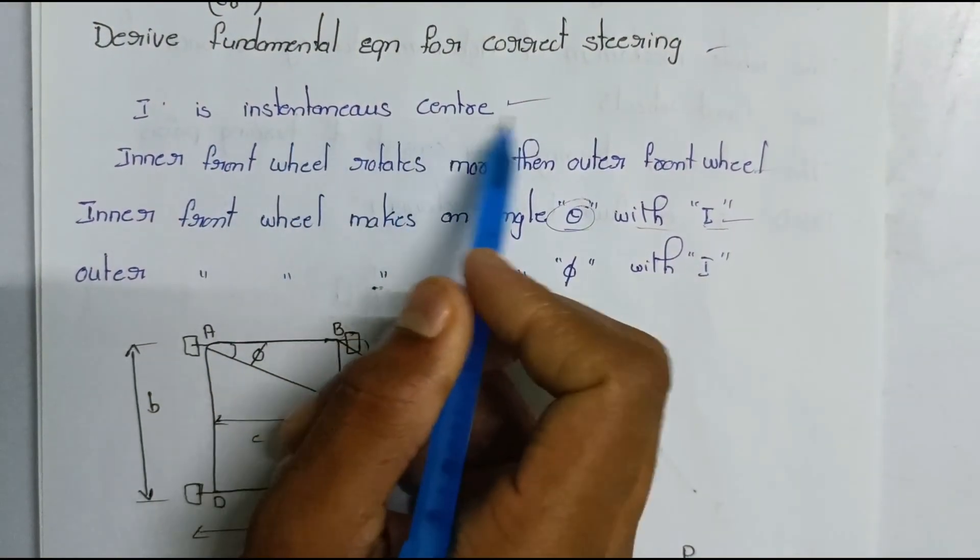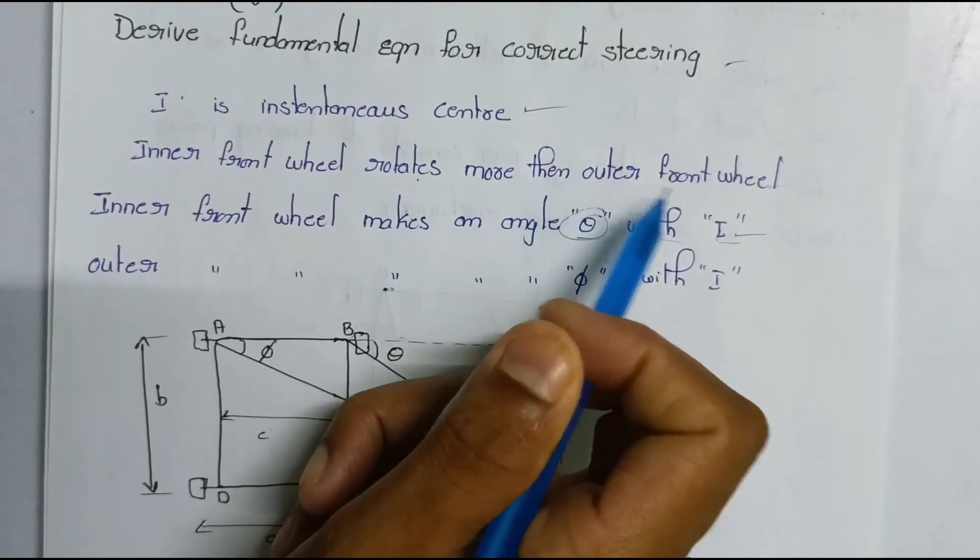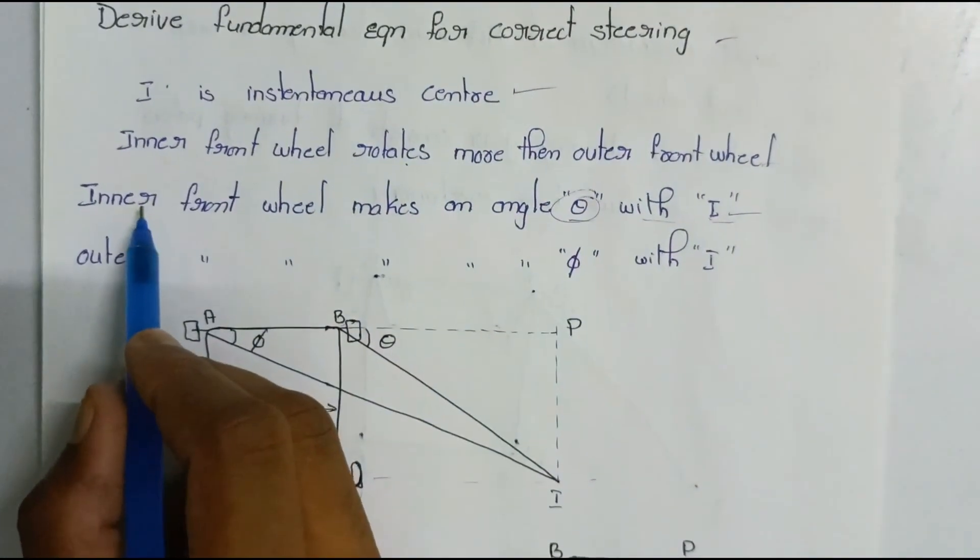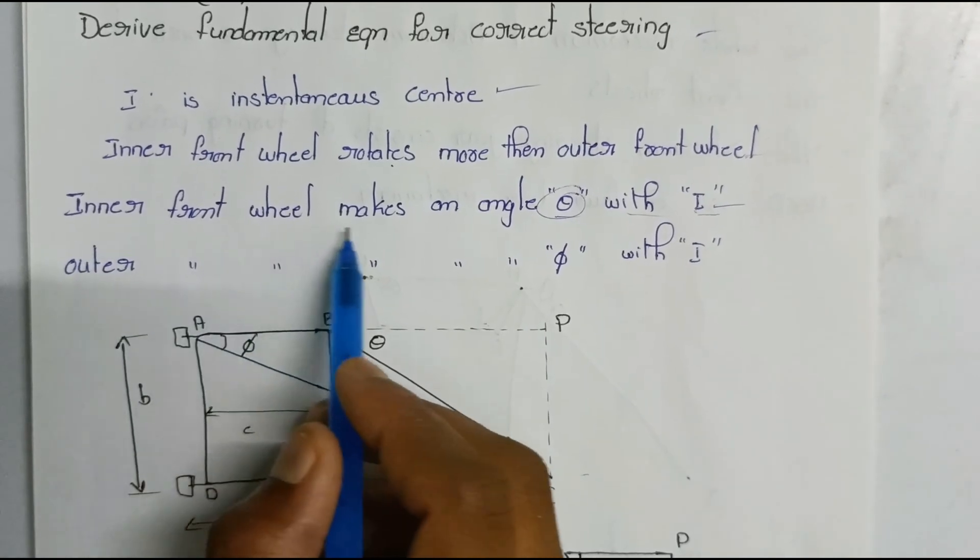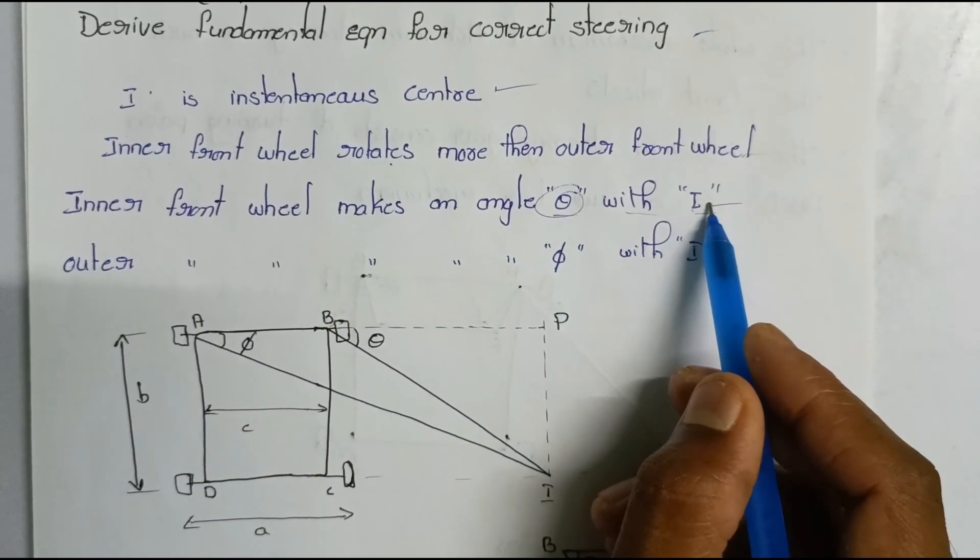I E is the instantaneous center. The inner front wheel rotates more than the outer front wheel. The second point is, inner front wheel makes an angle theta with I.